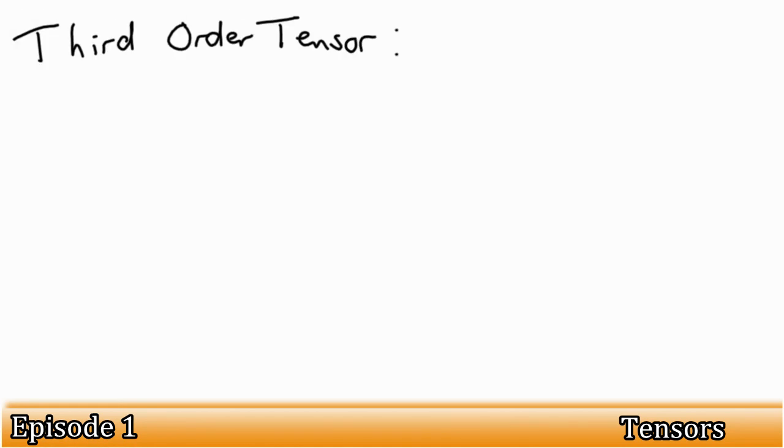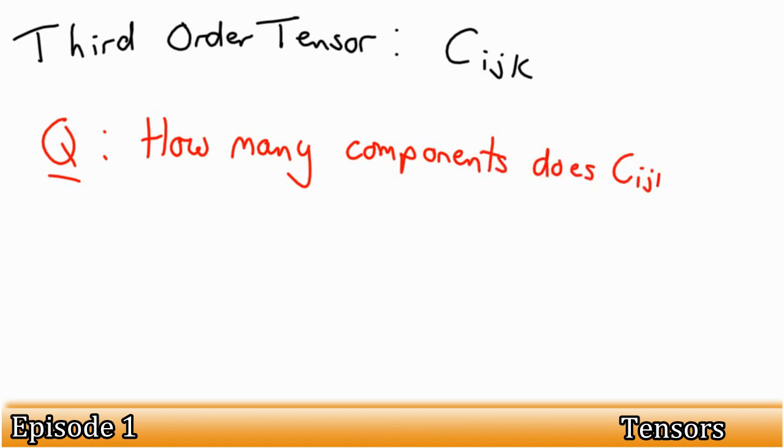Similarly, we can write third order tensors like so: cijk. From what we have learnt, how many possible components are there for cijk? Well, since there are three possible values for i, j, and k, we have 3 times 3 times 3, which equals 27.